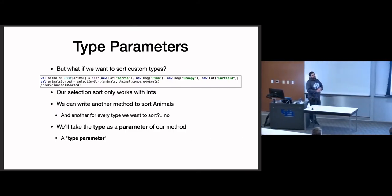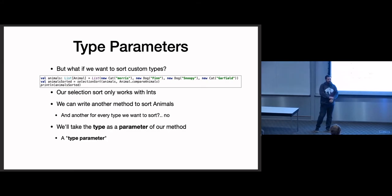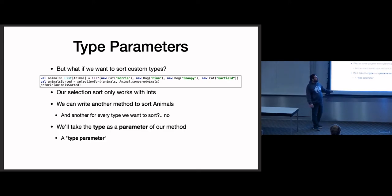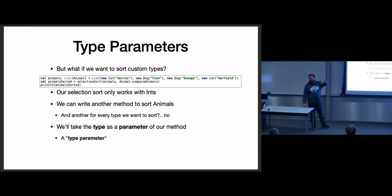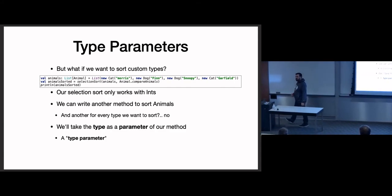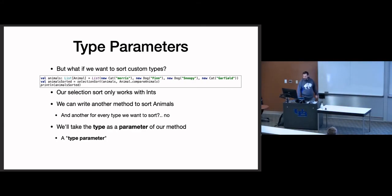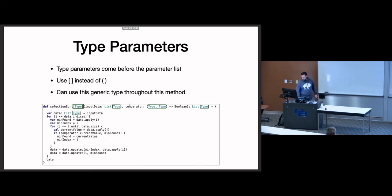But we have a problem: the method I just showed only works for ints. What if I want to sort animals, game objects, or game objects by their distance to the player? For that, we're going to use a type parameter. We're getting a lot of flexibility by taking in functions; now we're going to take in a type parameter as well. There's actually another parameter list we can add to our methods that takes in a type. We use square brackets, then a variable name — I named it type, or T for short — and that takes in the type when the method is called.